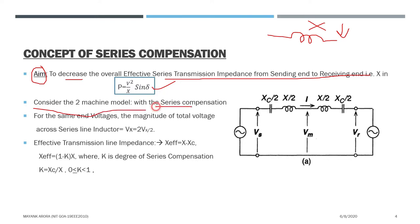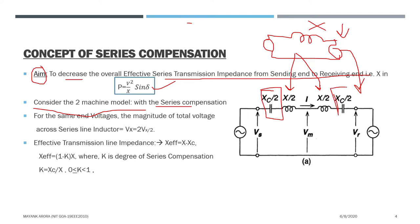We will consider a two-machine model with a series impedance. When we consider the uncompensated transmission line, we represent this system with X, VS, and VR. With series compensation, I will divide the transmission line impedance into two halves — X/2 and X/2 — and add series compensation at each half. This way, if one part becomes a short circuit, the other part can handle that short circuit current.